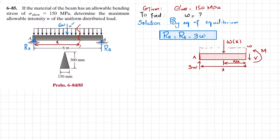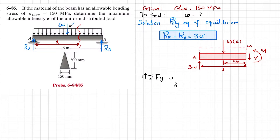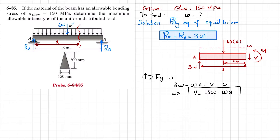Using the equilibrium condition — sum of all forces in the y-direction equals zero, with upward forces positive — we have 3w upward, minus w times x downward, minus shear force V equals zero. Therefore V equals 3w minus wx. This is the equation of shear force.